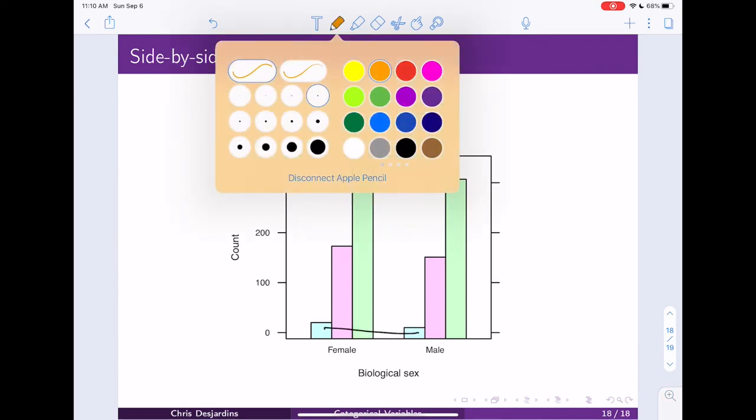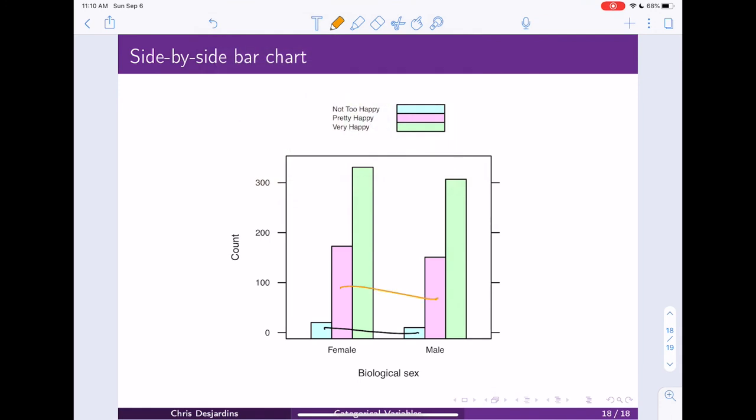But here we can easily compare these different categories like this, right? This one to this one, this one to this one, and this one to this one. And you can really visually, this comparison is very easy to facilitate here.